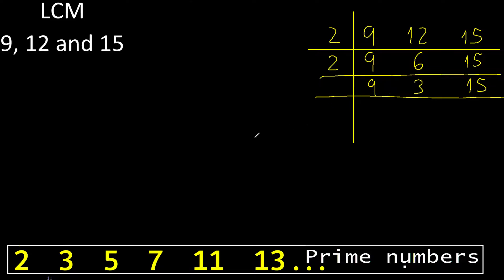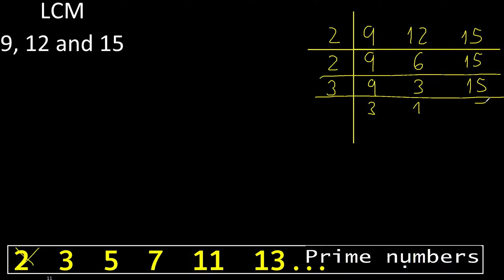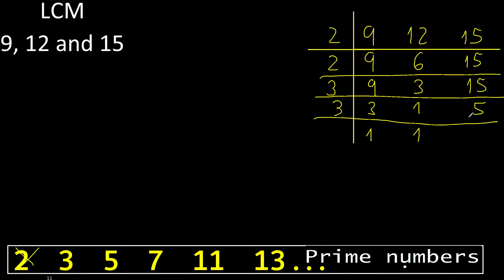10 cannot be divided by 2, but can be divided by 3. Divided by 3: 3 divided by 3 is 1, divided by 3 is 5. 10 cannot be divided by 3, therefore equal.